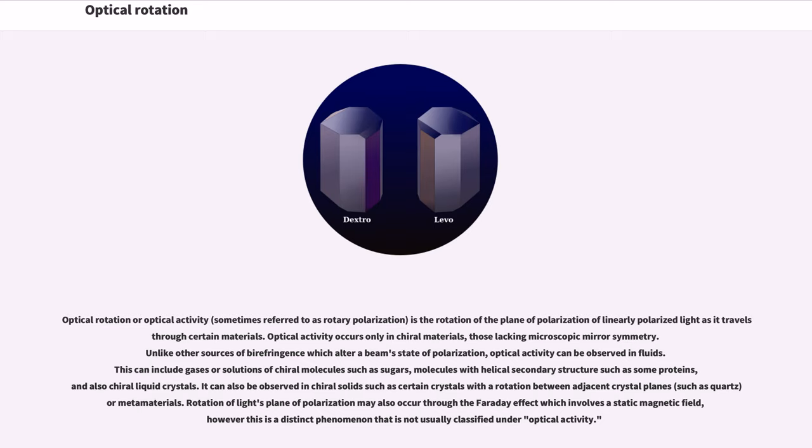Unlike other sources of birefringence which alter a beam's state of polarization, optical activity can be observed in fluids. This can include gases or solutions of chiral molecules such as sugars, molecules with helical secondary structure such as some proteins, and also chiral liquid crystals. It can also be observed in chiral solids such as certain crystals with a rotation between adjacent crystal planes or metamaterials.